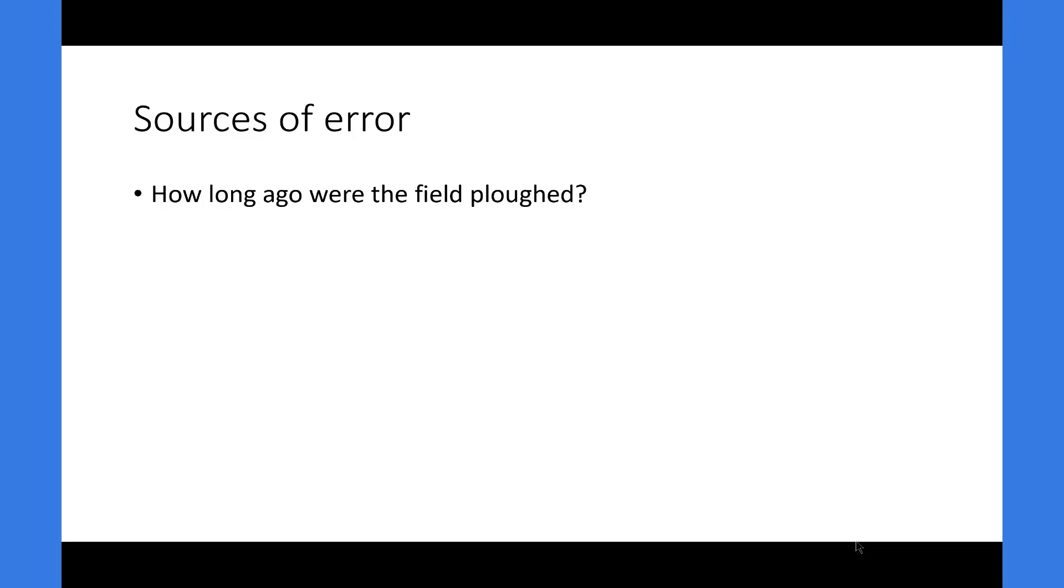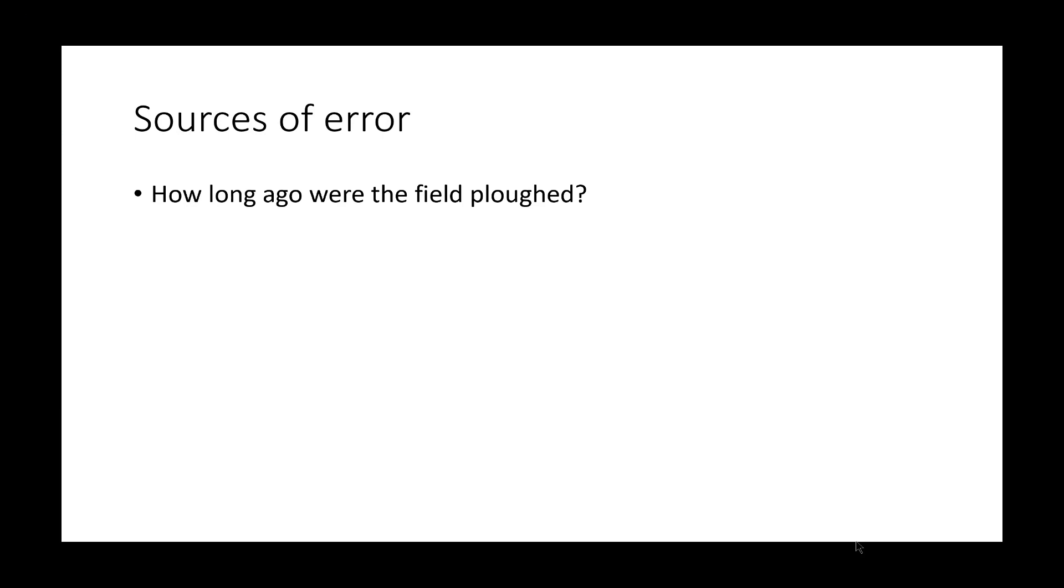So sources of error: how long ago were the fields plowed? I never really took that into consideration, and that would have a massive effect on organic matter and organic carbon in the soil. I know the silage field was plowed probably five or six years ago, and sample C hasn't been plowed in a very long time. And sample B, I didn't know when it was last plowed. Again, were they fertilized at the same time? Did they receive the same amount of fertilizer? I didn't control these and I should have. It should have been a controlled variable in my experiment.